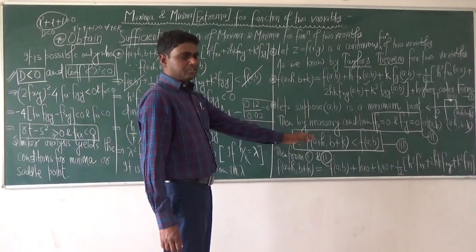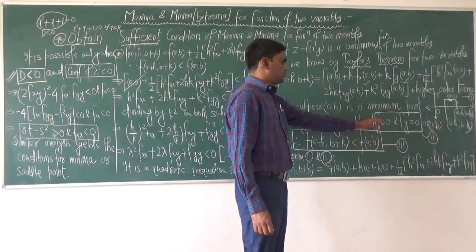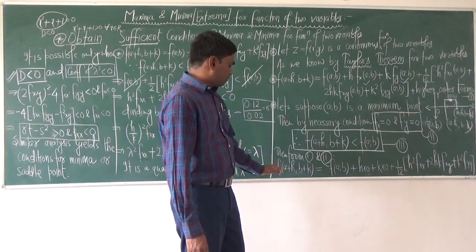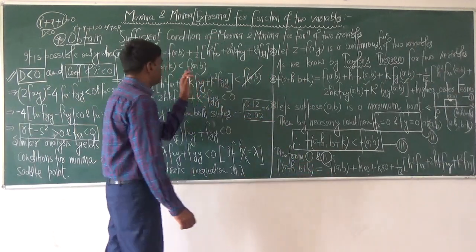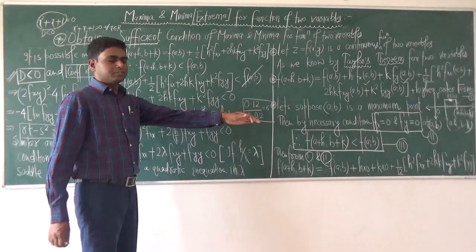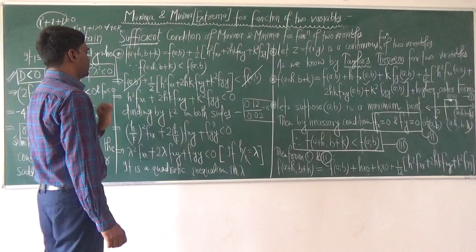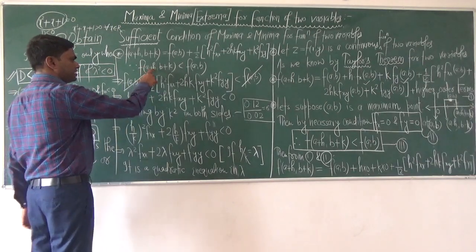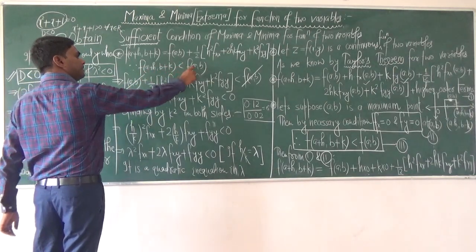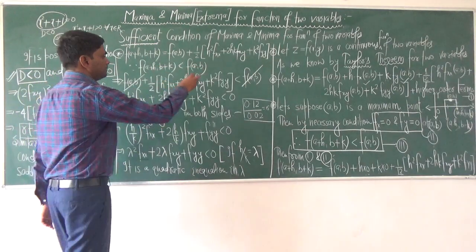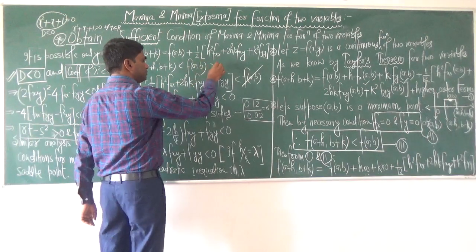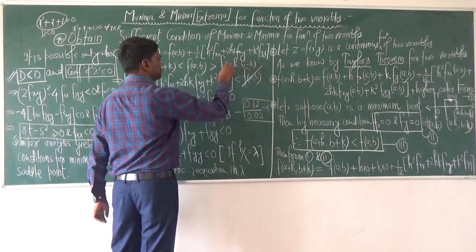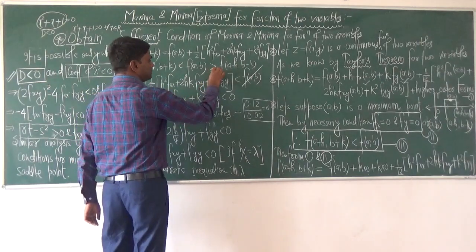From the first and second conditions, we substitute fx = 0 and fy = 0 into Taylor's theorem. After simplification, the terms h·fx and k·fy vanish, giving zero. In the third condition we have f(a+h, b+k) < f(a, b). We cancel f(a, b) from both sides. After simplification we get an inequality involving only second order terms.